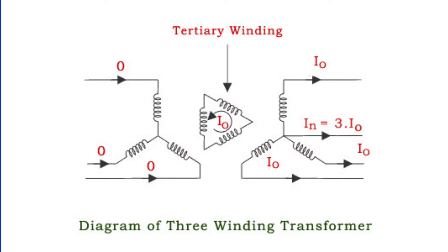In a star-star neutral transformer, the presence of the tertiary winding significantly diminishes the zero-sequence impedance. This ensures that the transformer is well prepared to deal with any imbalances that might transpire, guaranteeing the smooth and efficient operation of the system.